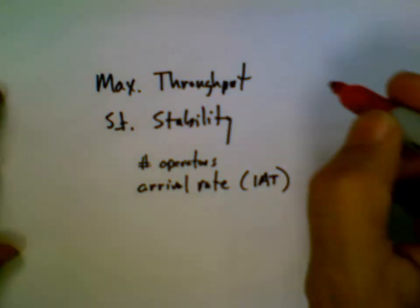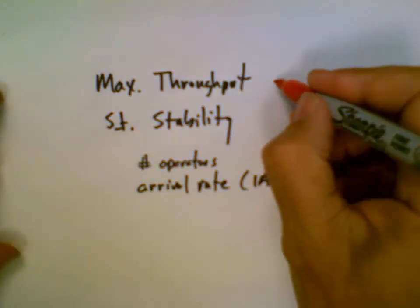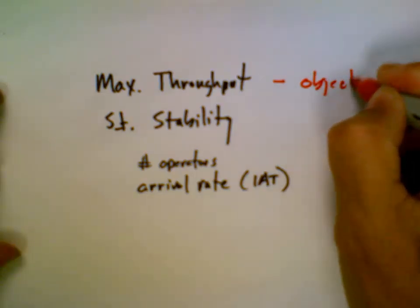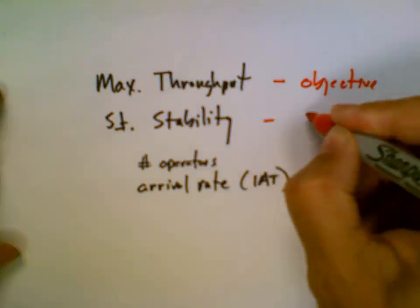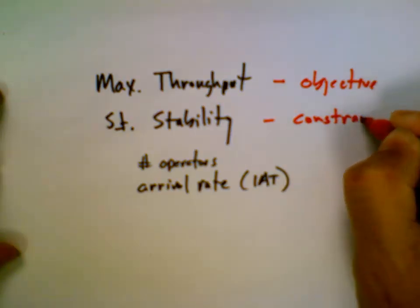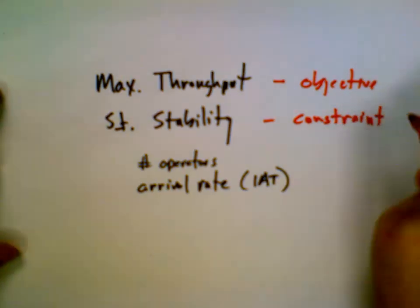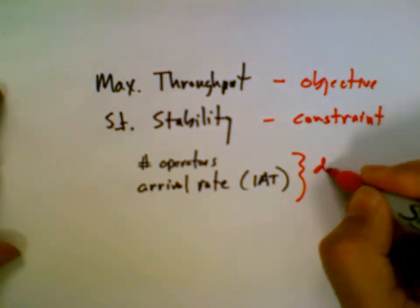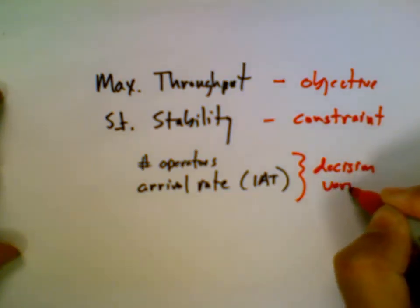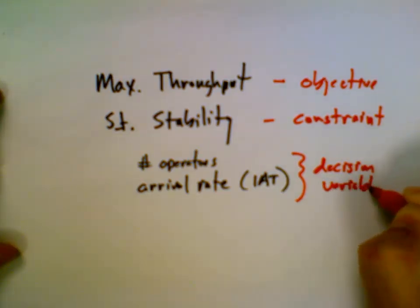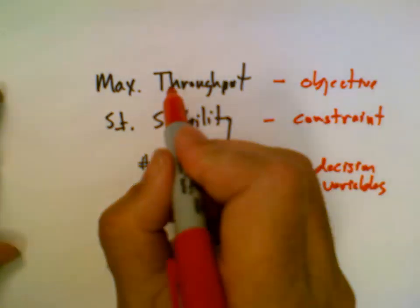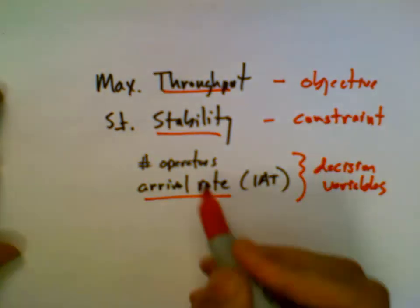In the optimization context, this is my objective, this is my single constraint, and these are my decision variables. The next step is we have to define all of these terms.